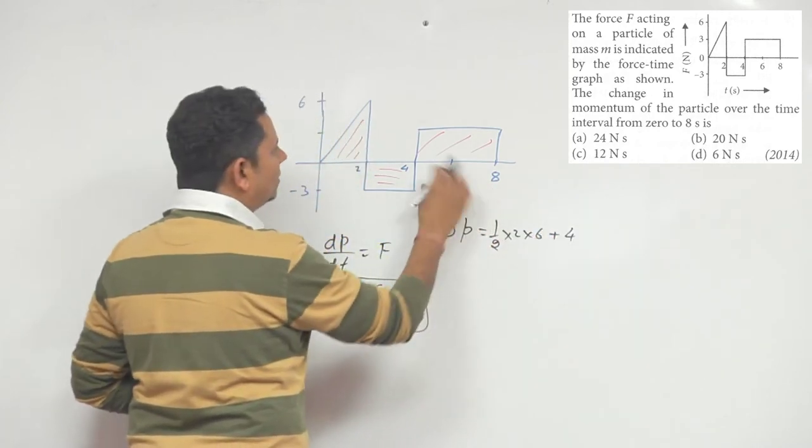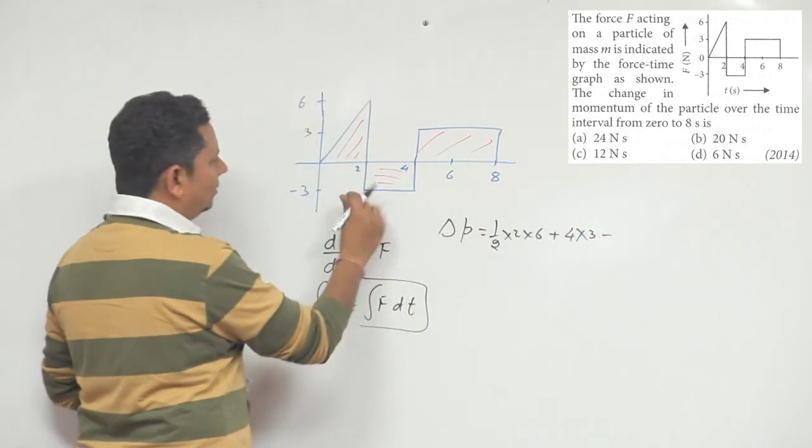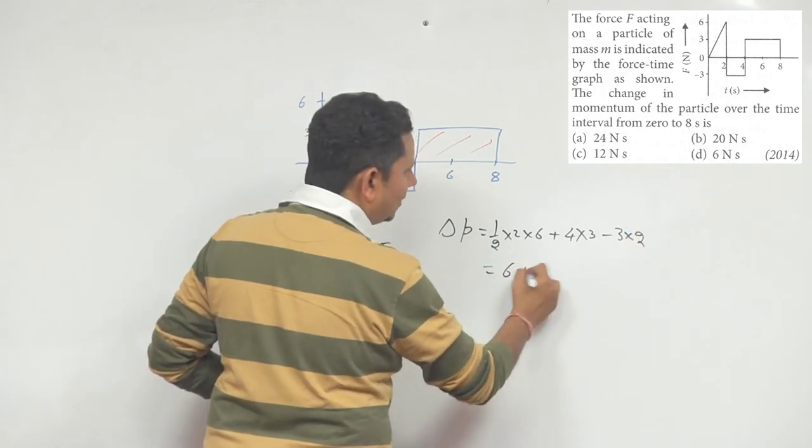Sorry, 8 minus 4 is 4 and this is 3, multiplied by 3. Minus this area, so this is 3 and this is 2, minus 3 into 2. So if we calculate this, we get 6 plus 12 minus 6.